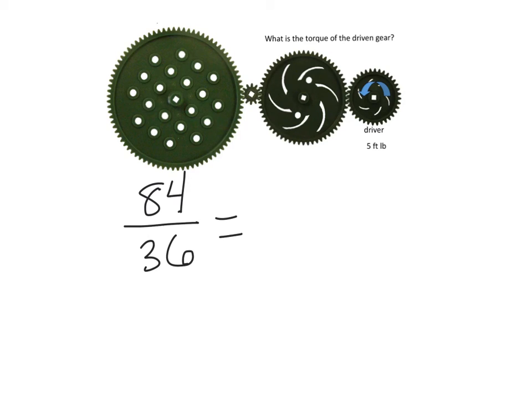equals my torque out, which is what I'm trying to find, over my torque in, which is 5 foot pounds. Now I know, because I'm going from a smaller gear to a larger gear, that this number should be larger than 5. So I take 84 times 5, and I divide it by 36, and that is going to give me 11.7 foot pounds.